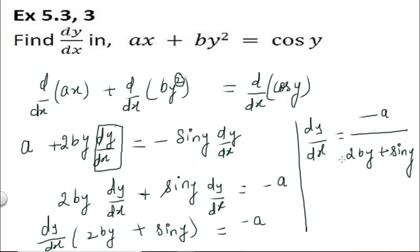To repeat: we differentiated both sides with respect to x. For ax, 'a' stays and x differentiates to 1. For by², 'b' stays, y² gives 2y, then we apply dy/dx for y. For cos y we get −sin y, and for y we get dy/dx. Combining the dy/dx terms gives us the final answer for dy/dx.